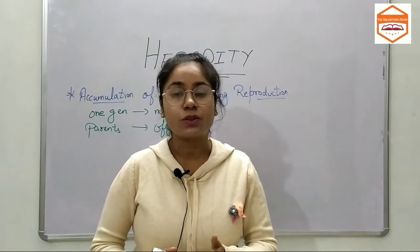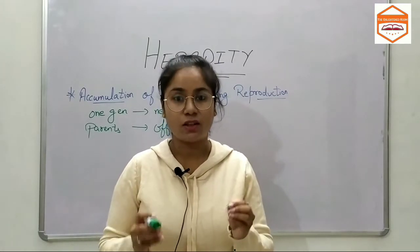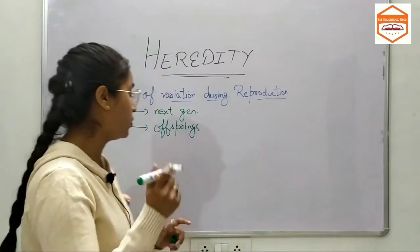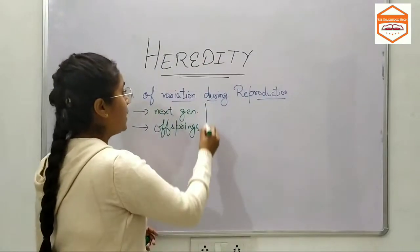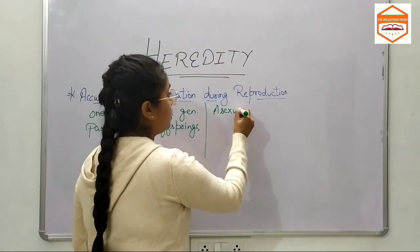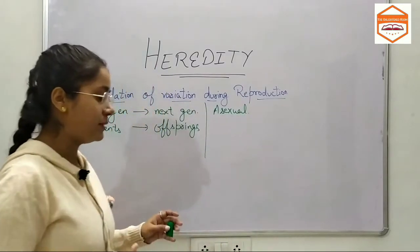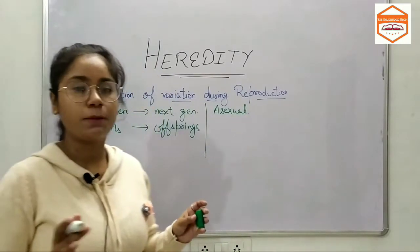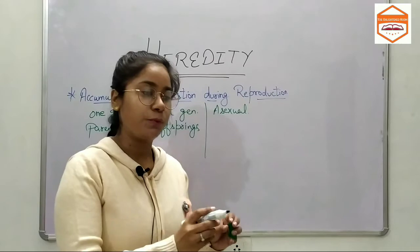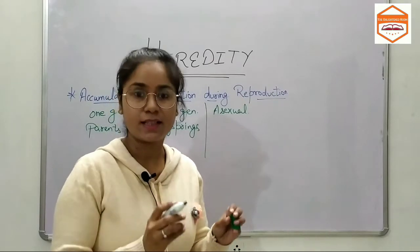As I mentioned at the beginning, variations occur sexually and asexually. In asexual reproduction, what happens is there is a single parent. It would reproduce asexually.